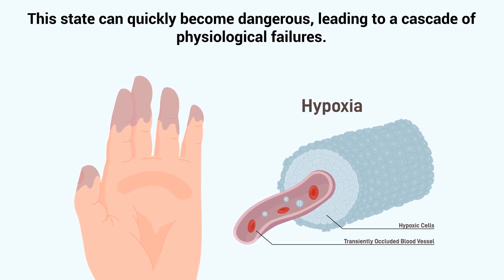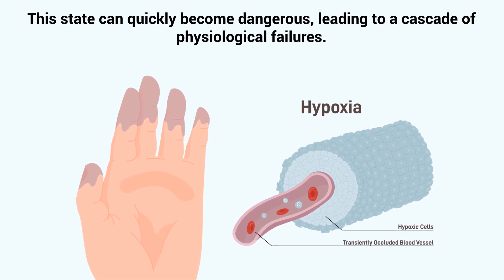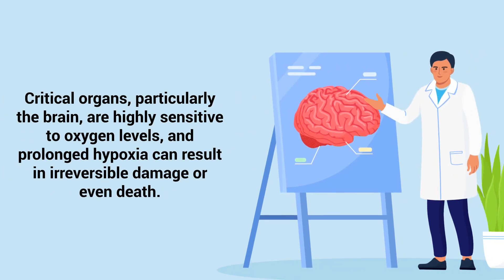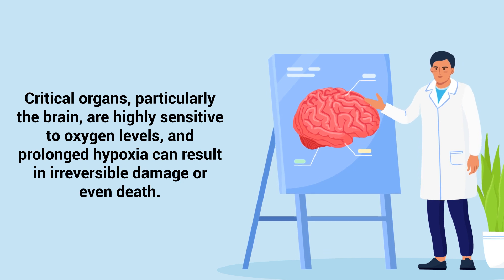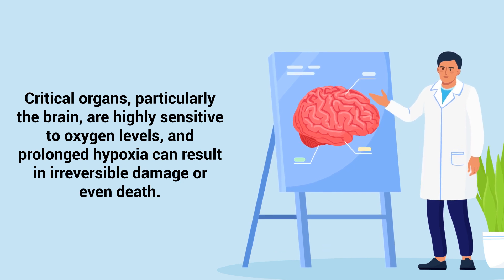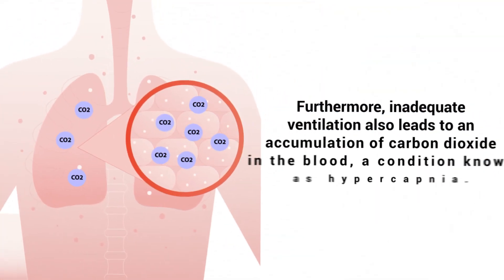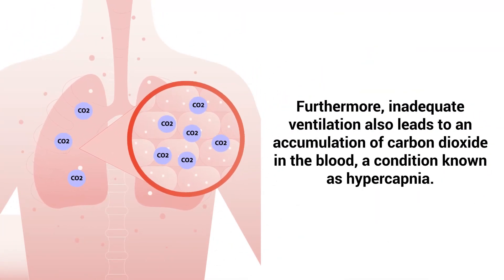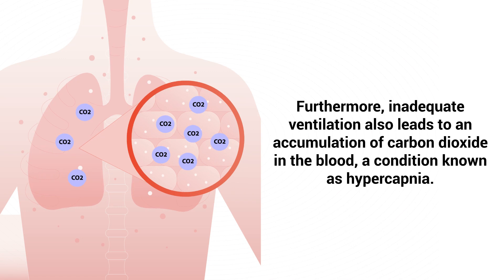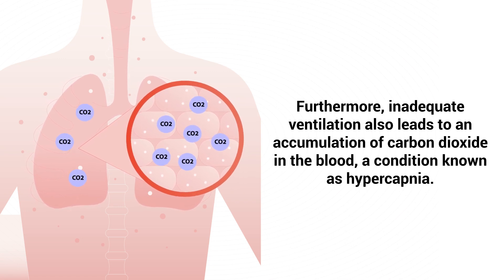This state can quickly become dangerous, leading to a cascade of physiological failures. Critical organs, particularly the brain, are highly sensitive to oxygen levels, and prolonged hypoxia can result in irreversible damage or even death. Furthermore, inadequate ventilation also leads to an accumulation of carbon dioxide in the blood, a condition known as hypercapnia. This exacerbates the body's acid-base balance and leads to respiratory acidosis.